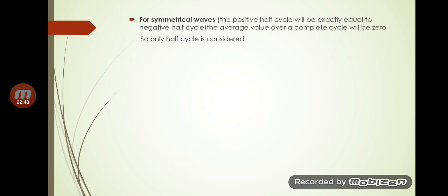For symmetrical waves, the positive half cycle is exactly equal to the negative half cycle. If we take the average value for a complete cycle, we can see that it equals zero. So for a symmetrical wave, only the half cycle is considered for finding out the average value.